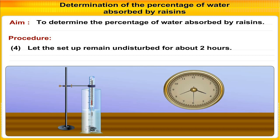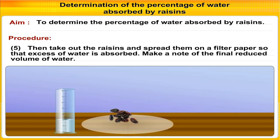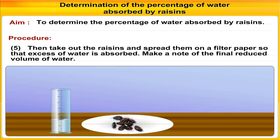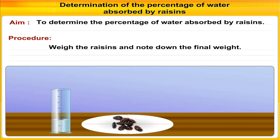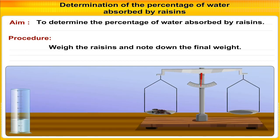Let the setup remain undisturbed for 2 hours. Then take out the raisins and spread them on a filter paper so that excess water is absorbed. Make a note of the final reduced volume of water. Weigh the raisins and note down the final weight. Repeat the experiment to calculate the percentage of water absorbed.